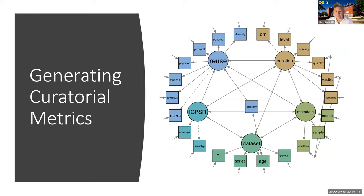We're looking for metrics, and this slide shows one representation of the structural equation model we might use. There are particular measures of reuse — diversity, secondary count, primary count, page views, downloads, number of users — as well as properties of ICPSR (restricted access, bibliography availability), properties of the dataset, properties of the metadata, and the curation steps. We have control variables for ICPSR, dataset, and metadata, and we're primarily interested in the relationship between reuse and curation. Our hope is to get labels and values for as many of these connections as we can in the next two and a half years.